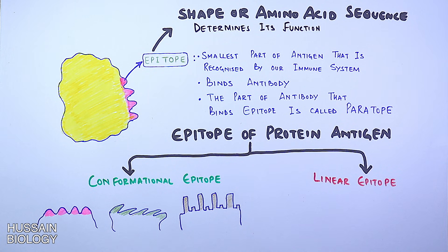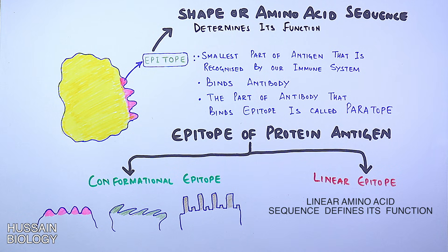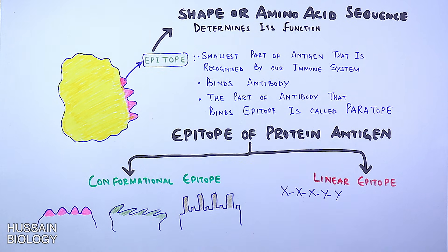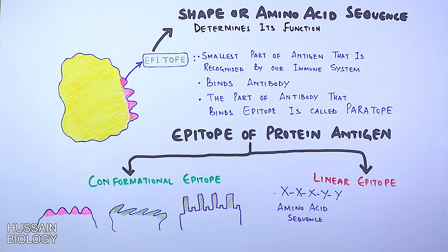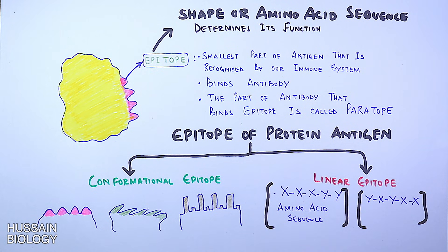On the other hand, we have linear epitopes, which do not require any three-dimensional structure to function. The amino acid linear sequence alone defines the function of the epitope. We can have different epitopes from linear amino acid sequencing — for example, if X and Y are two amino acids, we can have sequences like X-X-X-Y-Y defining one epitope, and Y-X-Y-X-X-X defining another, giving us different types of epitopes through linear sequencing.